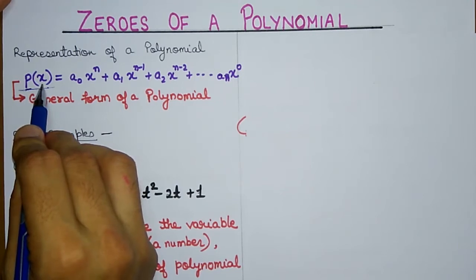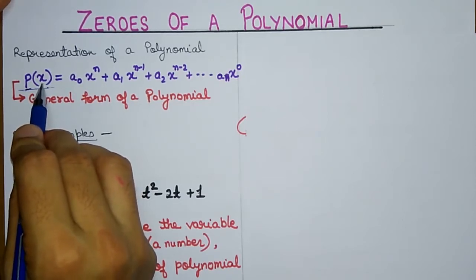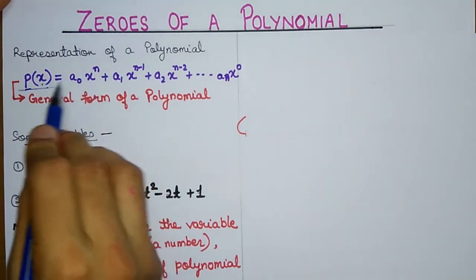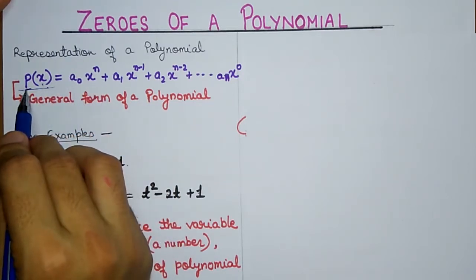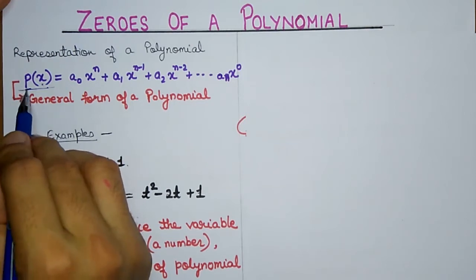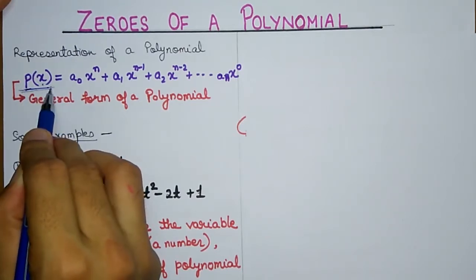A polynomial is an expression in which you only have a variable with non-negative integral power. This variable can be x, t, w, y — any variable. The polynomial can be called P, Q, R, S, T — any name. So P(x) means a polynomial whose variable is called x, and it is represented as P(x).